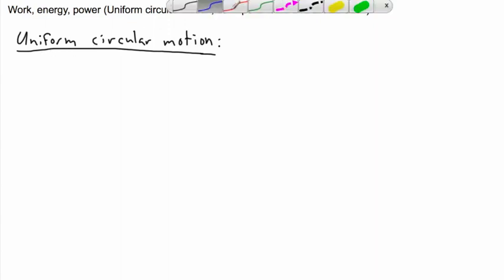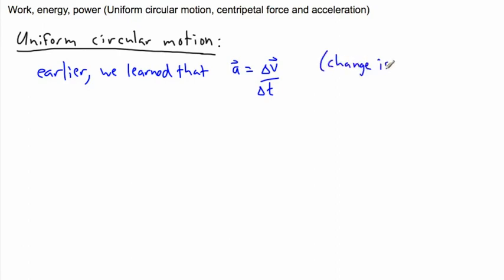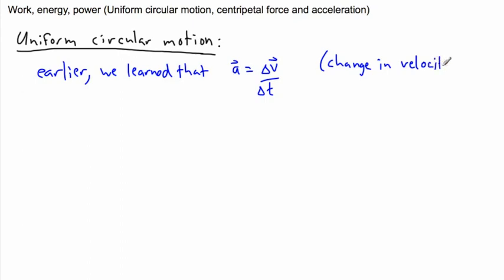Before that I want to do a little bit of a blast from the past. Earlier we learned that acceleration is due to a change in velocity over time — delta v over delta t. So the key thing is: a change in velocity means you accelerate. As long as you change your velocity, you would accelerate.